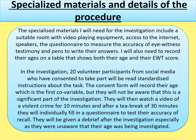Your next subheading is: specialized materials and details of the procedure. Specialized materials is basically a shopping list of everything you need. Here: a suitable room with video-playing equipment, access to the internet, speakers, a questionnaire to measure the accuracy of eyewitness testimony, pens to write down answers — or a laptop or tablet to record answers. You will also need a table to record both co-variables: participants' age and eyewitness testimony score.